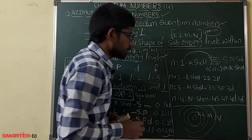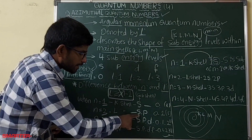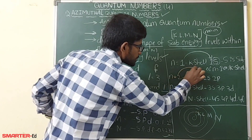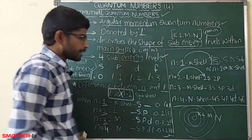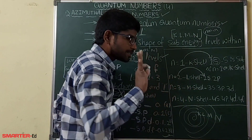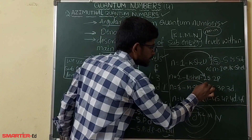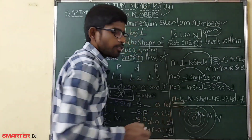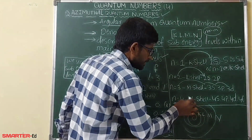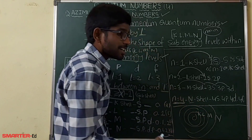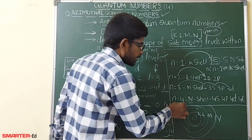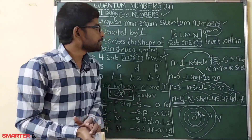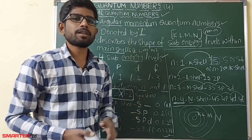When n equals 3, the M shell has three sub-shells, so we write 3s, 3p, and 3d. When n equals 4, the N shell has four sub-shells, giving us 4s, 4p, 4d, and 4f. This is about the azimuthal quantum number, also called the angular momentum quantum number.